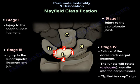The Mayfield classification shows the stages of perilunate instability. Stage 1 is injury to the scapholunate ligament. Stage 2 is injury to the capitolunate joint. Stage 3 is injury to the lunotriquetral ligament and joint. Stage 4 occurs due to failure of the dorsal radiocarpal ligament. The lunate will rotate and dislocate, usually into the carpal tunnel, giving us the spilled teacup sign.